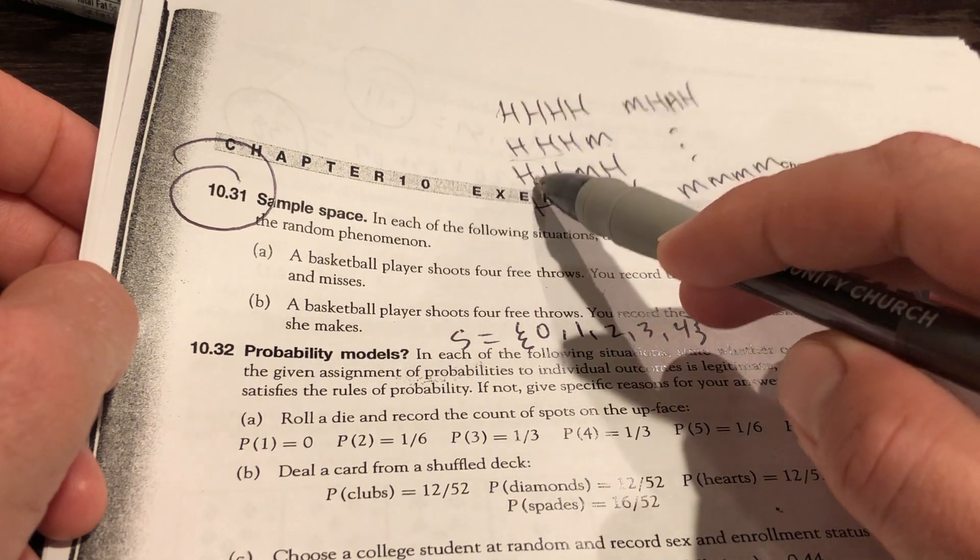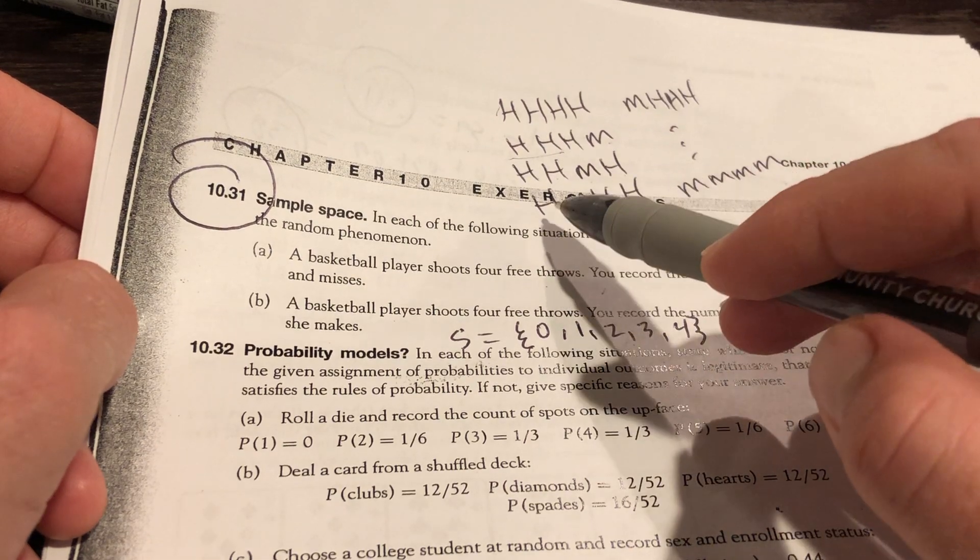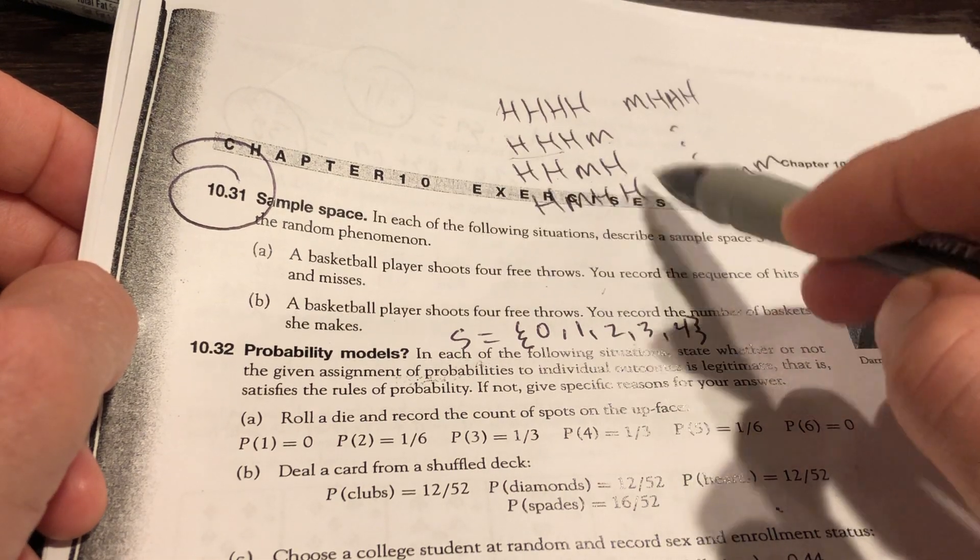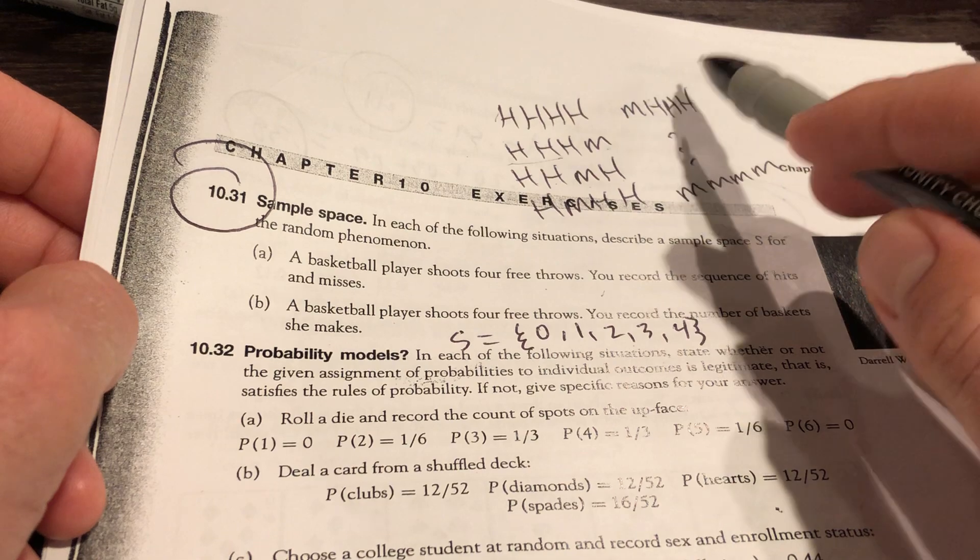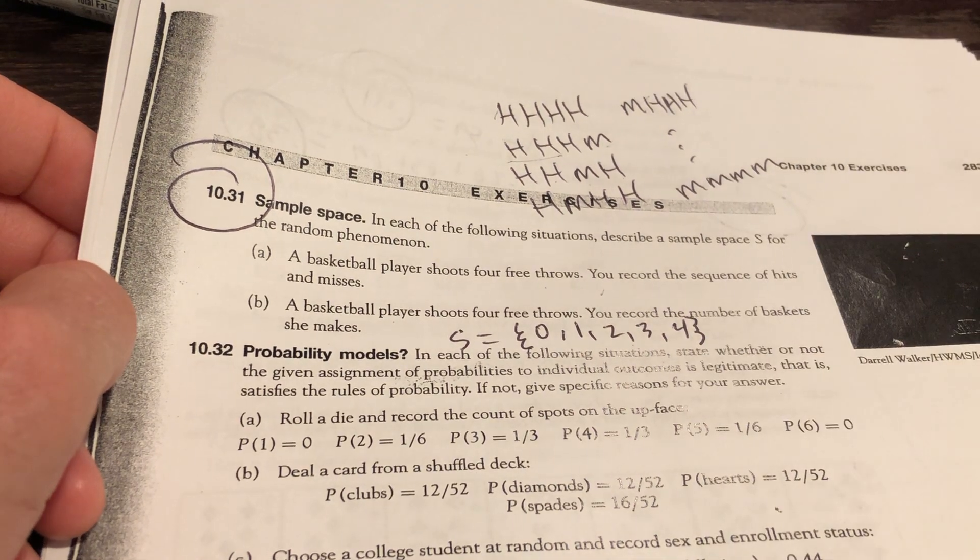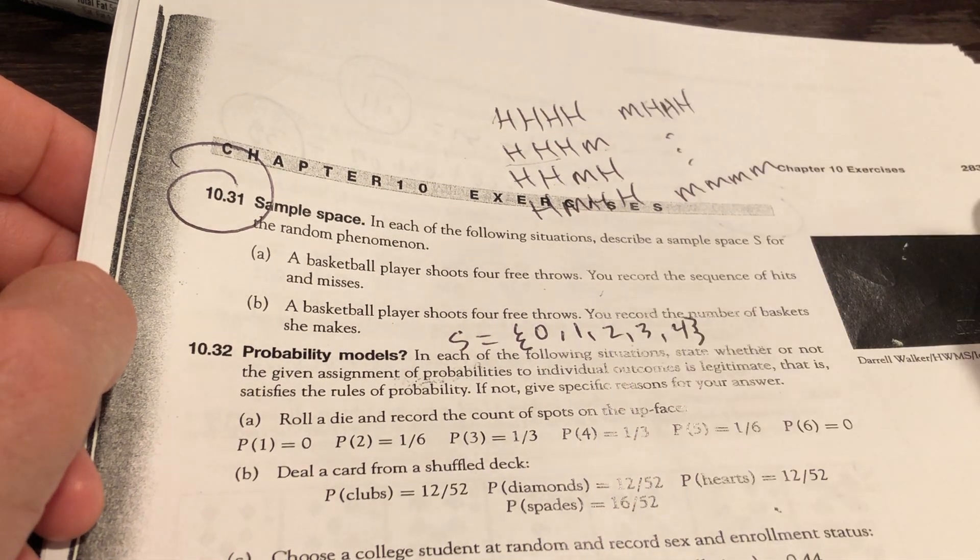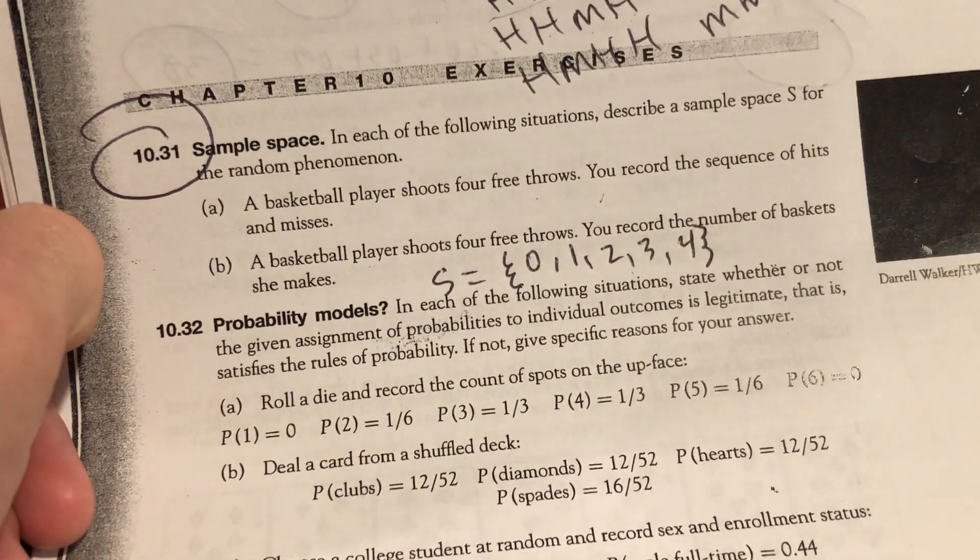These are all the different ways you can make three and miss one. Make the first three, miss it. Make it, make it, miss, make. Make it, miss, make it, make it. Miss it, make it, make it, make it. All the way down to four straight misses. There's 16 of them, so you can just use dot, dot, dot.